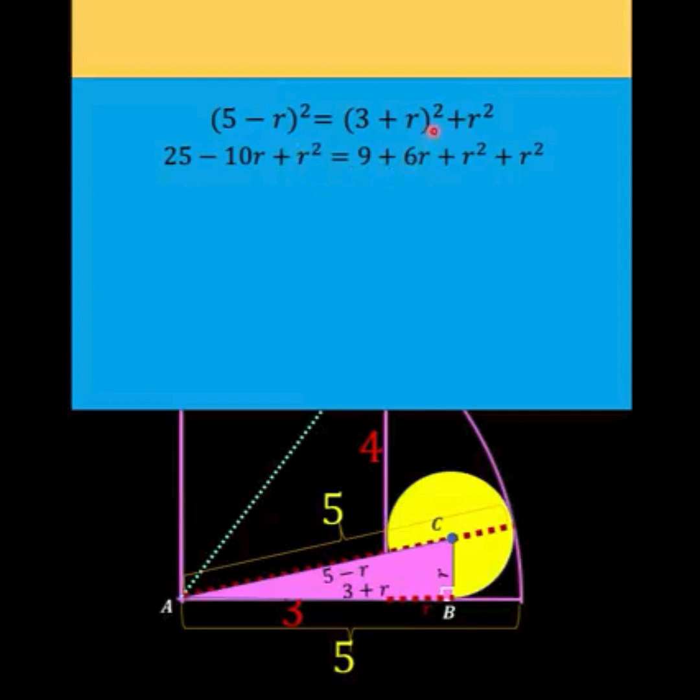That is also equal to the square of this binomial plus r². And expanding this binomial we have the square of the first term 9 plus twice the product of the first and the second terms. We have two times three times r which is 6r plus the square of the second term r² and then copy r².